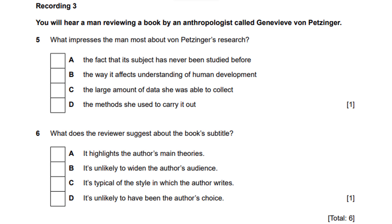Von Petzinger concluded the symbols reflect the emergence of abstract and creative thinking, starting much earlier than previously thought and spanning over 30,000 years — the truly significant conclusions of her work. The book's subtitle is 'Unlocking the Mysteries of the World's Oldest Symbols,' but the mysteries are not ultimately solved, not due to poor writing or insufficient research, but because the available evidence makes it impossible. A more accurate subtitle would be 'Gathering the Evidence and Asking the Right Questions.' Inside the book she never oversells her findings and is very cautious about conclusions. For anyone interested in ancient cave art, this book is highly recommended.